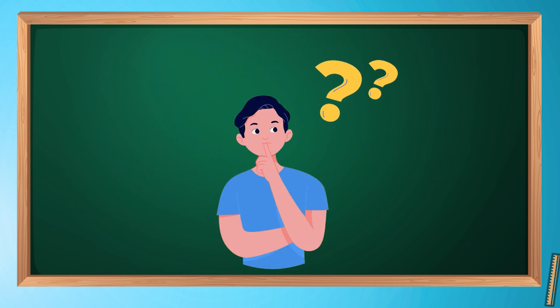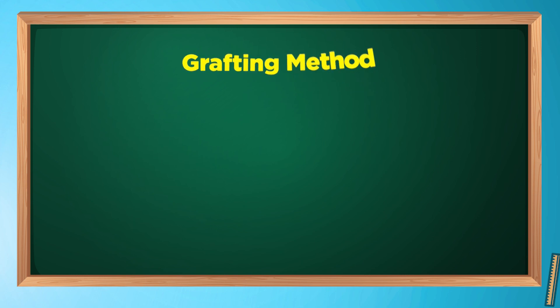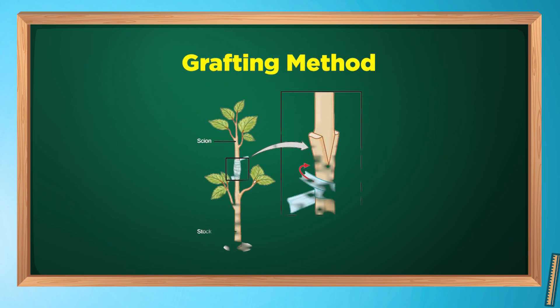Have you ever thought about how we get a better variety of plants? It is because of an artificial method of reproduction called grafting. In this method, branches of different plants are joined. The shoot which is transferred is called the scion, and the plant with roots to which the scion is attached is called the stock. The stock provides nutrients, water, and minerals to the scion, and with the passage of time a new plant develops from it.